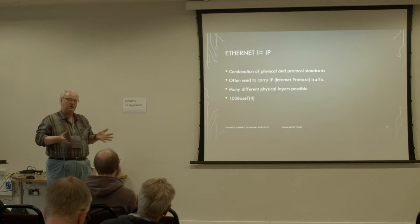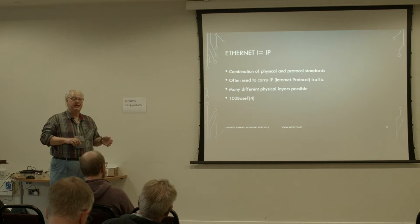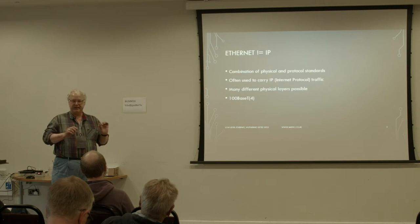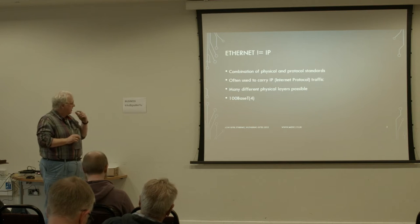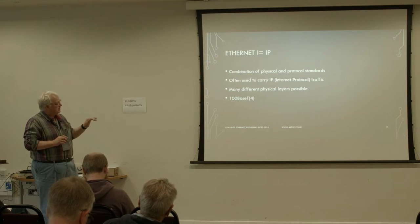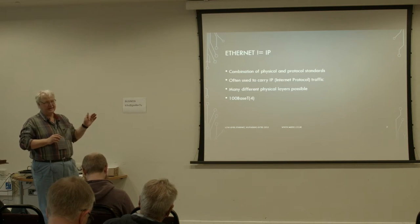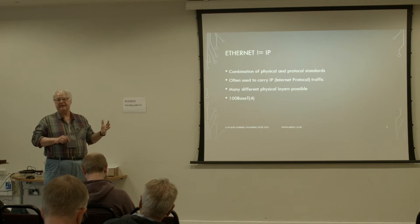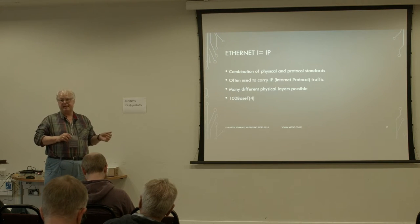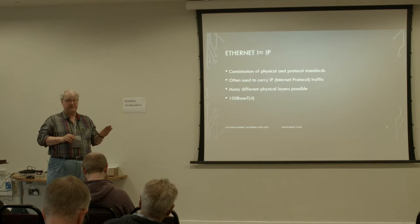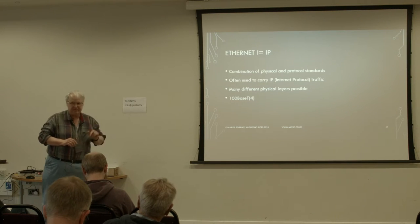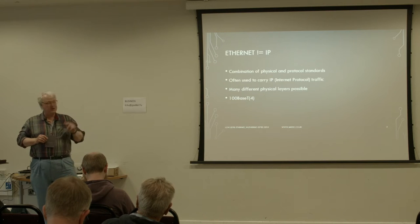Ethernet can go over all sorts of different physical layers, but I'm only interested in the little RJ45 connectors and wire with four twisted pairs. I'm really only interested in what's called 100BaseT — properly 100BaseT4 — and the point about that is it's 100 megabits per second, so it's quite fast. It's also sometimes called Fast Ethernet, but it really ought to be called 100BaseT.